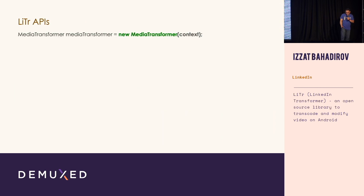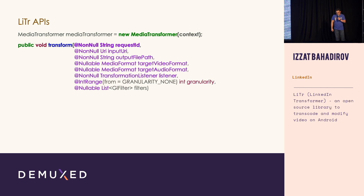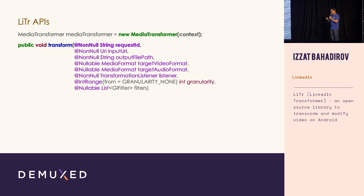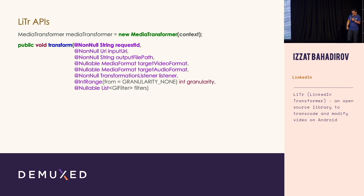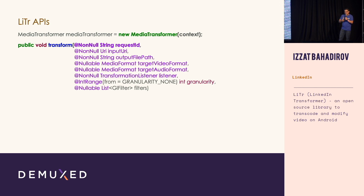How do you use LiDAR? You create an instance of MediaTransformer and call the transform command. You tell it where to get data, where to put data, and how to transform it. You give it a listener instance — the whole thing is very asynchronous, so a listener gives you progress updates. One interesting detail: we ask you to pass in a unique request ID to effectively tokenize your request, because you can actually call transform multiple times and it will queue up your requests, so we need to be able to tell them apart.